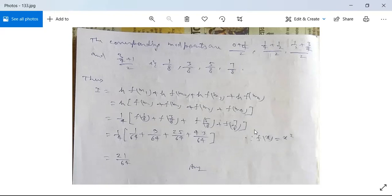Now f(x) is given as x². So f(1/8) will be (1/8)² which is 1/64, (3/8)² which is 9/64, (5/8)² which is 25/64, and (7/8)² which is 49/64.